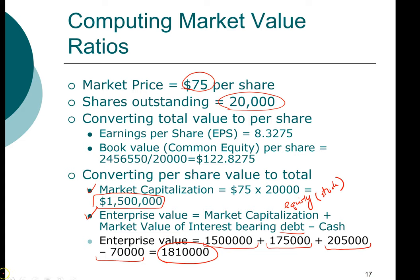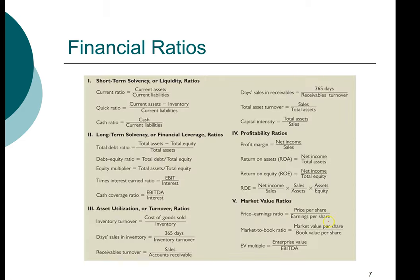We can now use the enterprise value to compute the next market ratio. The last ratio is the enterprise value multiple, where EV stands for enterprise value. This multiple is enterprise value divided by EBITDA — earnings before interest, tax, depreciation, and amortization. Since EBITDA excludes interest, this is the income earned by the entire company before paying out interest or dividends. It reflects cash operating income because we add back non-cash expenses like depreciation and amortization.